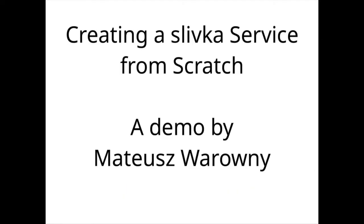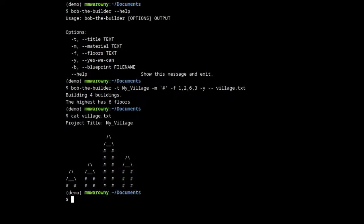I'm now going to hand over to the author of the system himself, Mateusz, who's going to explain how you can create a Slivka service from scratch. The tool he'll be wrapping is a program called Bob the Builder, which allows you to create ASCII art renderings of villagers. Now let's turn this program into a web service using Slivka.